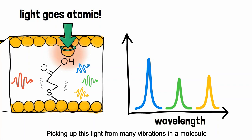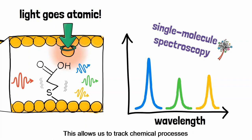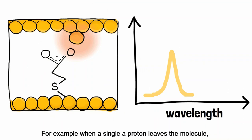Picking up this light from many vibrations in the molecule provides a fingerprint spectrum for every type of molecular structure. This allows us to track chemical processes happening to the molecule.